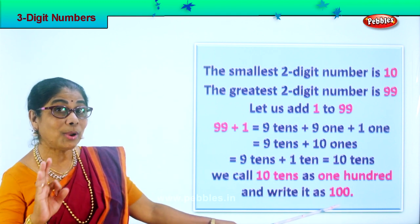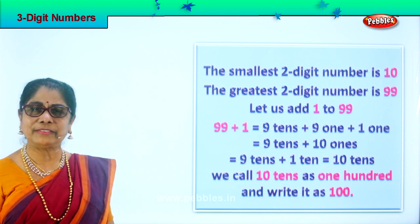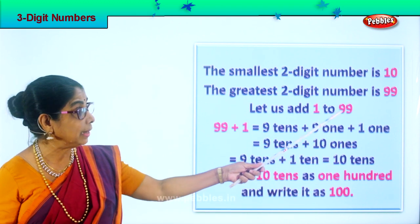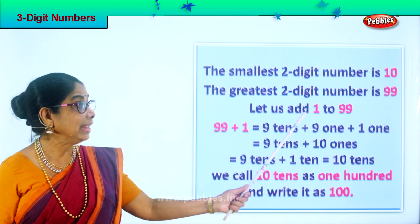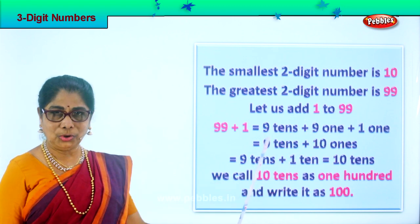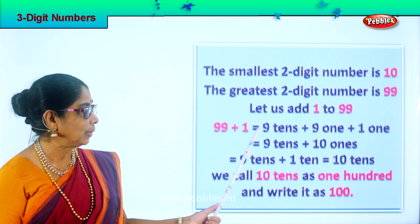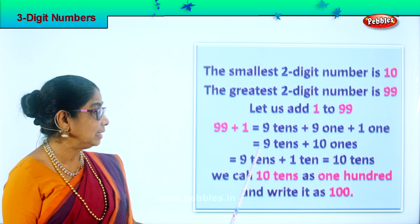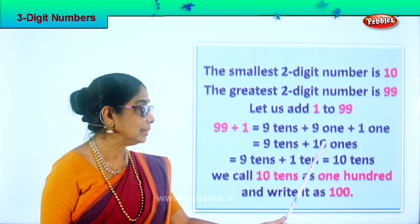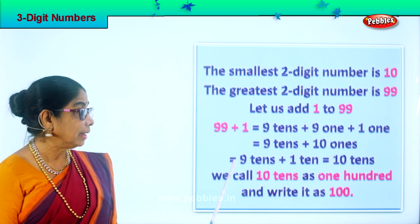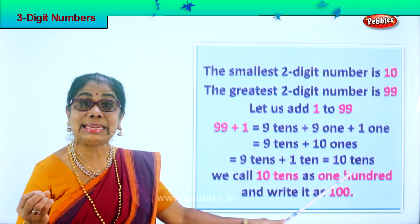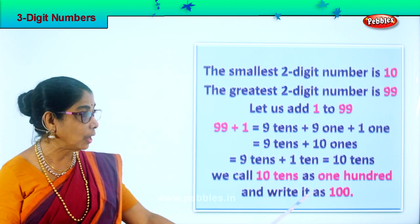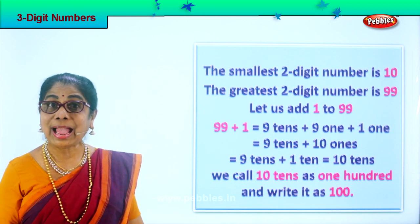One hundred is the smallest three digit number. Let's read once again: the smallest two digit number is ten — one and zero. The greatest two digit number is ninety-nine. Ninety-nine plus one equals nine tens plus ten ones, which equals ten tens plus zero ones. We call ten tens as one hundred and we write it as one, zero, zero. What do we read this as? One hundred.